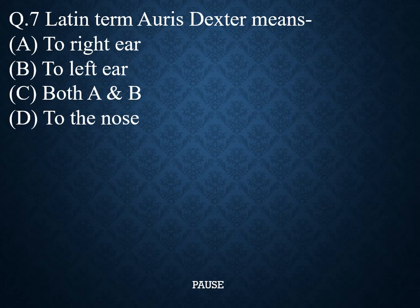Question 7. Latin term 'Auris Dexter' means. Option A: To right ear. Option B: To left ear. Option C: Both A and B. Option D: To the nose. And the right answer is: To the right ear. So 'Auris Dexter' — 'Dexter' means to the right ear.